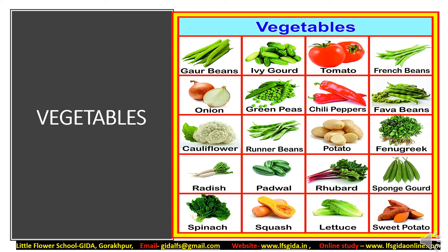Next topic is vegetables. My dear students, on your screens you can see a variety of vegetables like potato, tomato, onion, radish, cauliflower, and so on. Eating vegetables every day is important for health. They provide us vitamins and minerals. Vegetables also keep us healthy and protect us from various diseases.